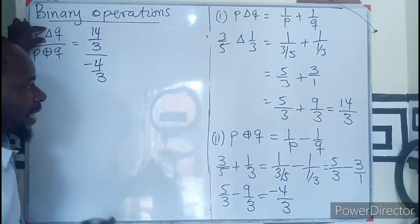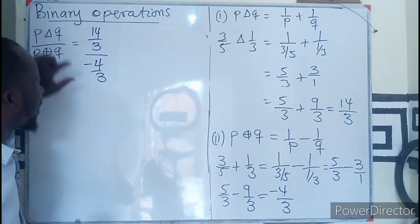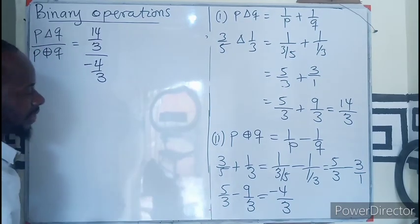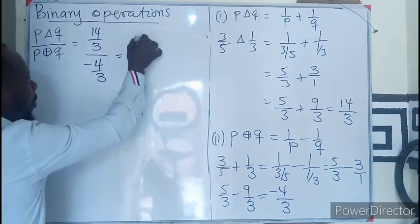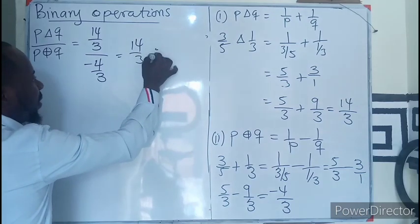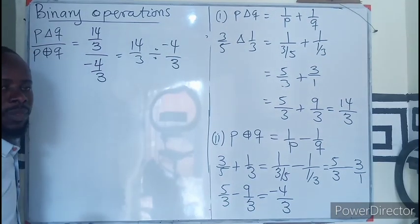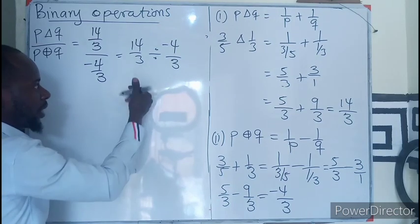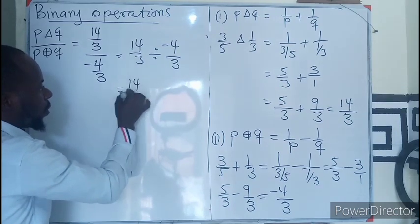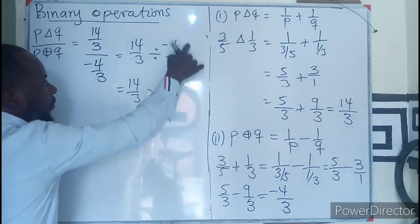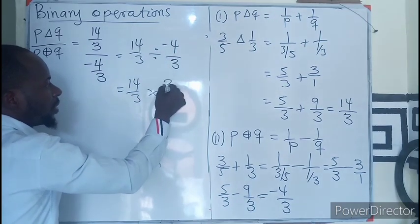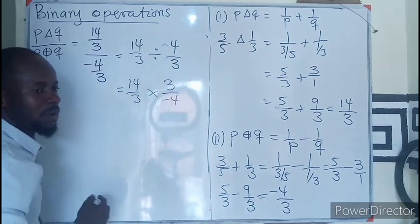If I want to solve this again, I will end up getting the same answer. So this becomes 14 over 3 divided by negative 4 over 3. We change this to multiplication, so 14 over 3 times the flip of this, which becomes 3 over negative 4.